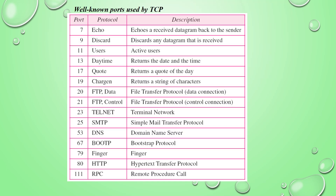Here is a list of well-known ports used by TCP, similar to those mentioned for UDP. Port 7 is echo, 9 is discard, 11 is active users, 13 is daytime, 17 is quote of the day, 19 is character generation, 20 is FTP data, 21 is FTP control, 23 is Telnet, 25 is SMTP, 53 is DNS, 67 is BOOTP, 79 is Finger, 80 is HTTP, and 111 is RPC (Remote Procedure Call).